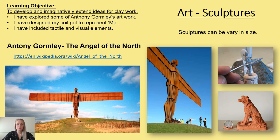On this slide there is a picture of the Angel of the North by Anthony Gormley. There is a link to Wikipedia if you wish to find out more information about him and I do challenge you to do this so that you fully understand what our work this term is all about. I would like you to think about what he is representing in his sculpture and what message he is trying to get across. Please note that sculptures can vary in size — some can be huge like his work and then he does actually produce tiny sculptures too. Our learning objective is to develop and imaginatively extend ideas for clay work, and our success criteria are to explore some of Anthony Gormley's artwork and design a clay pot — a coil pot — that represents you and includes tactile and visual elements.